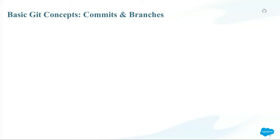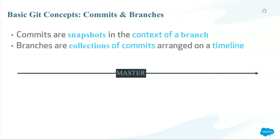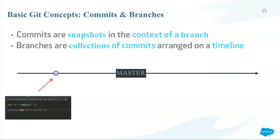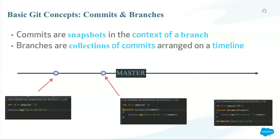Let's go over some basic concepts in Git. This might be familiar to you, but in case it isn't — commits are basically snapshots in the context of a branch, and branches are collections of commits arranged on a timeline. Let's say you have a master branch, you write some code, you make a commit. You write some more code, make a commit, change that file again, make a commit. Your branch is master and it comprises three commits. The master gives the context to those commits.